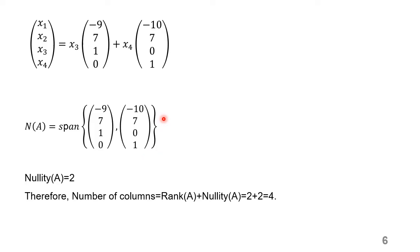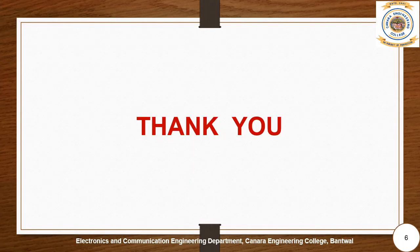Therefore, there are two basis vectors, so the Nullity(A) = 2. Rank(A) = 2 and Nullity(A) = 2. The number of columns in the given matrix should always equal Rank(A) plus Nullity(A), according to the nullity theorem. So 2 + 2 = 4, which matches the number of columns. Thus, the nullity theorem is verified. In the next videos, we will study about linear transformation. Thank you.